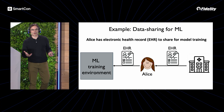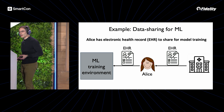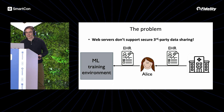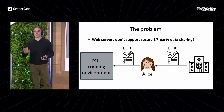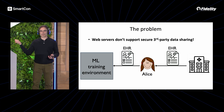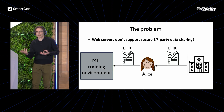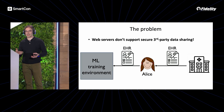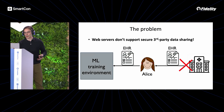Alice has an electronic health record she would like to provide for the purposes of training this model. The problem she'll naturally run into is that most web servers don't support general-purpose secure third-party data sharing. There's no easy way for Alice to relay her electronic health records to the training entity unless there's some pre-existing relationship between her health provider and that entity.